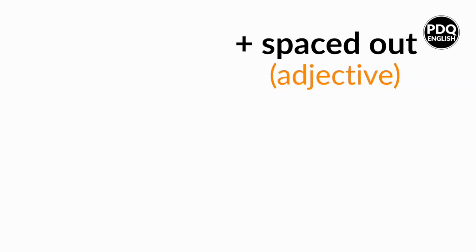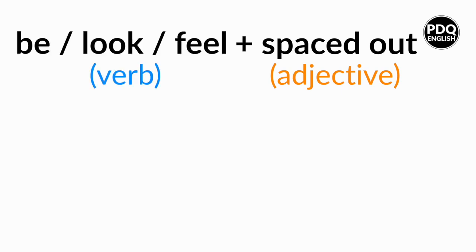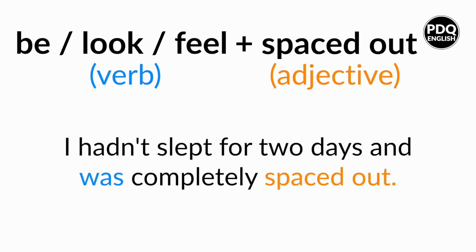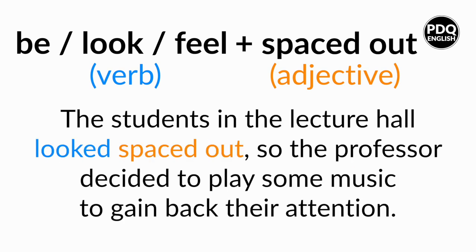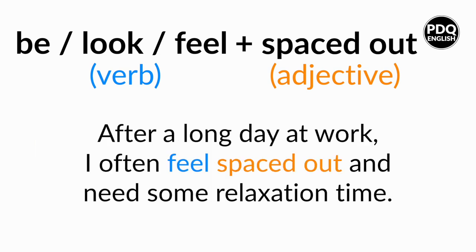Or you can use this phrase as an adjective. Then you need to add the D at the end. So spaced out. So this adjective you can use with different verbs. For example, be spaced out, look spaced out or feel spaced out. I hadn't slept for two days and was completely spaced out. The students in the lecture hall looked spaced out, so the professor decided to play some music to gain back their attention. After a long day at work, I often feel spaced out and need some relaxation time.